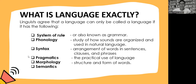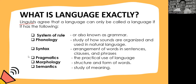The last aspect is semantics — the study of meaning; specifically the study of references, meaning, and truth. So these are the aspects that linguists say must be present for something to be called a language: the system of rules, phonology, syntax, pragmatics, morphology, and semantics. By the way, a linguist is someone who studies language, while linguistics is the study of language.